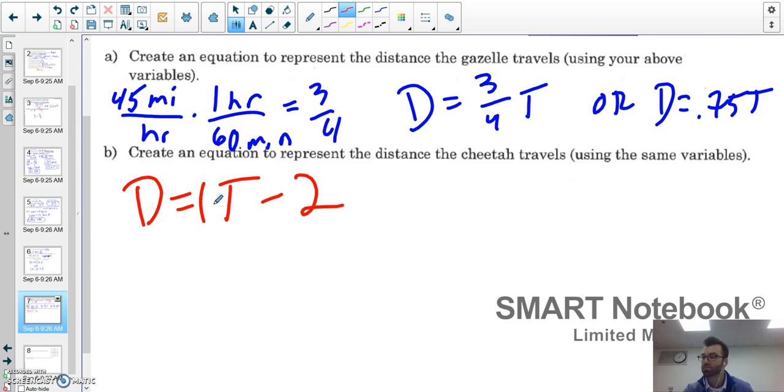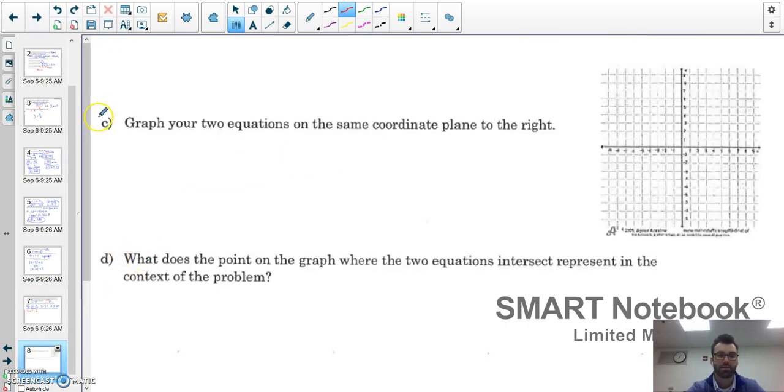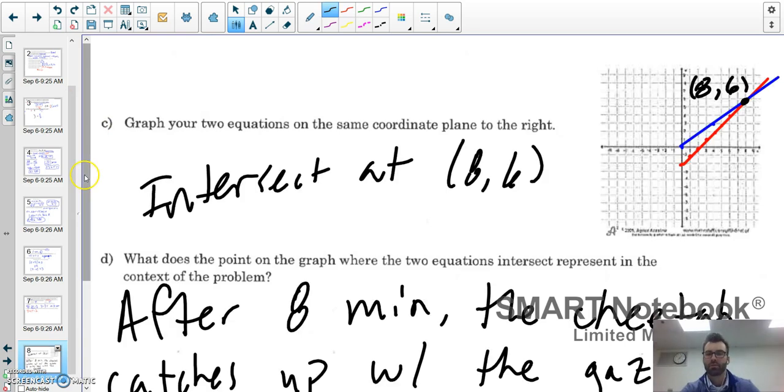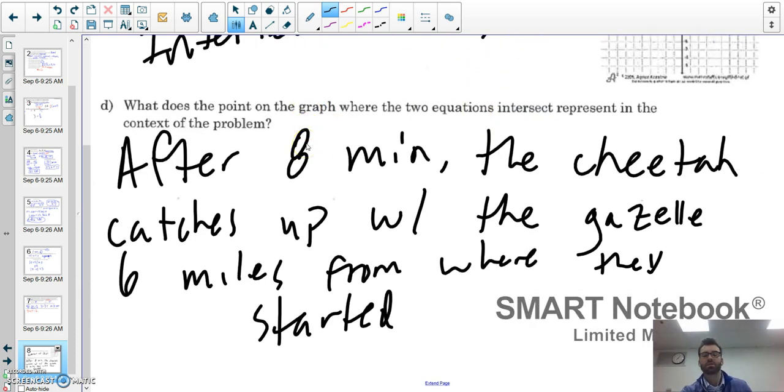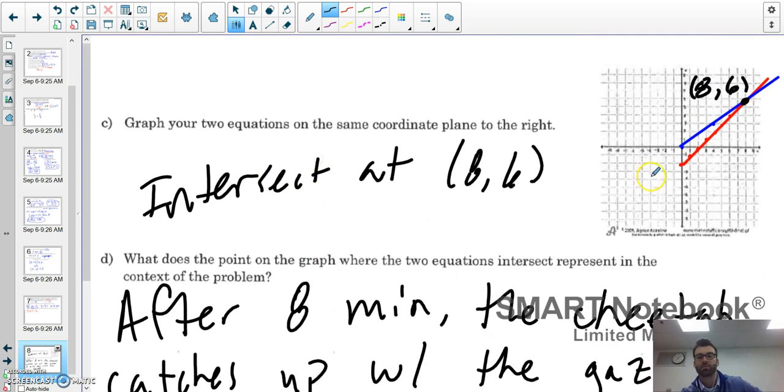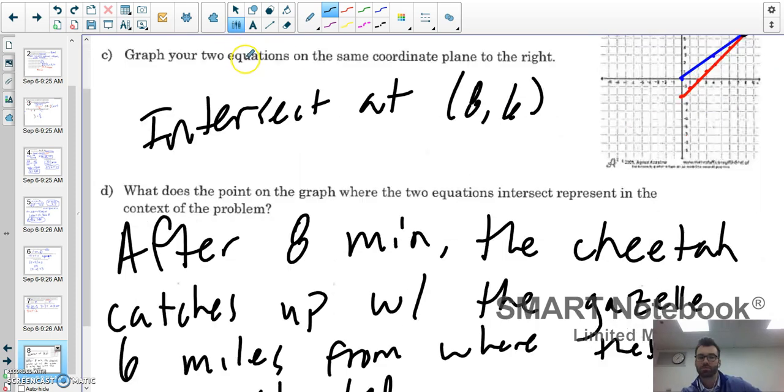I want you to graph these two equations and check the graph. Here's my graph. I got my two lines to intersect at (8, 6). Remember, so let's put this in the context of the problem: after 8 minutes the cheetah catches up with the gazelle 6 miles away from where they started. Remember this is going to be our time and this is going to be our distance. Hopefully that helped, happy studying.